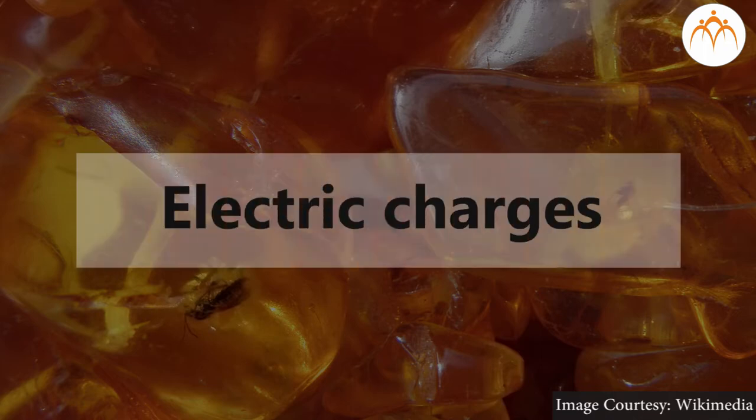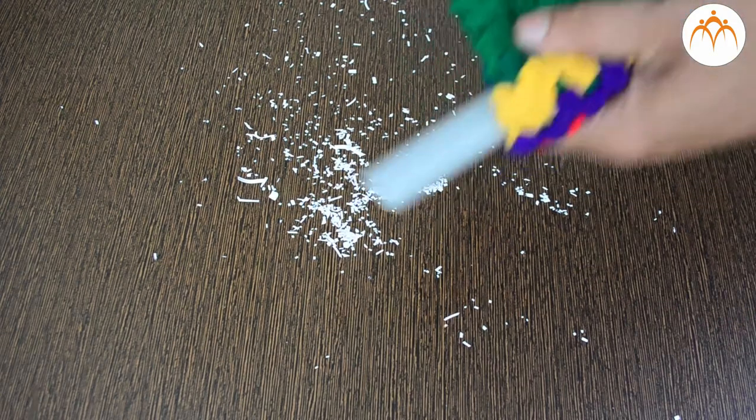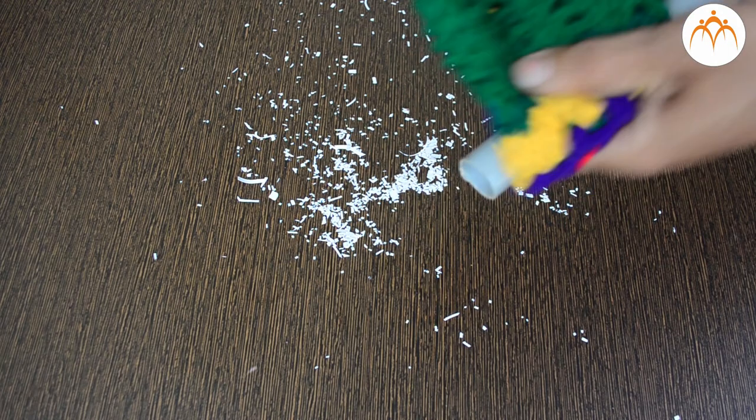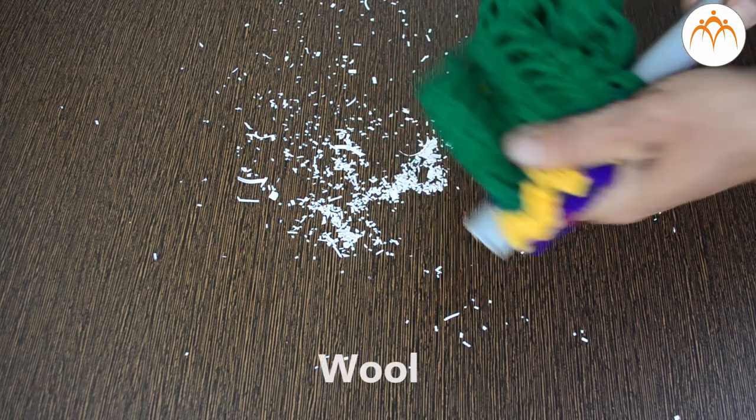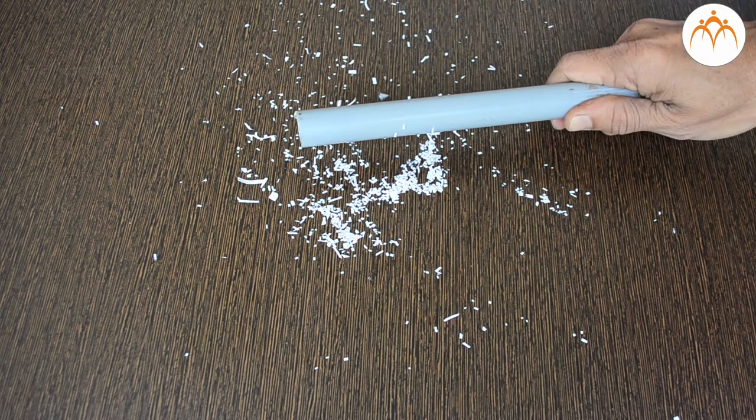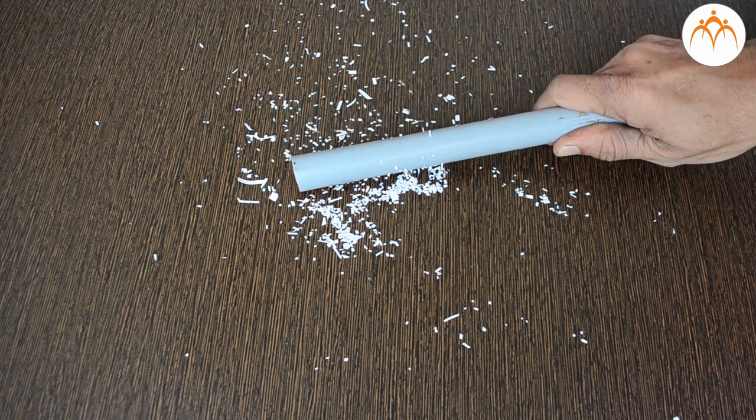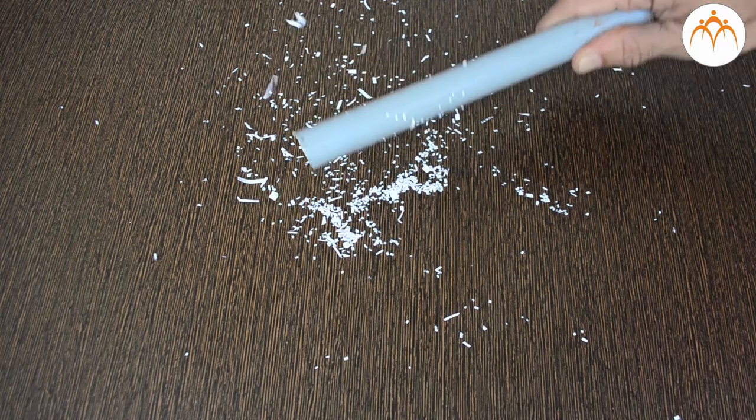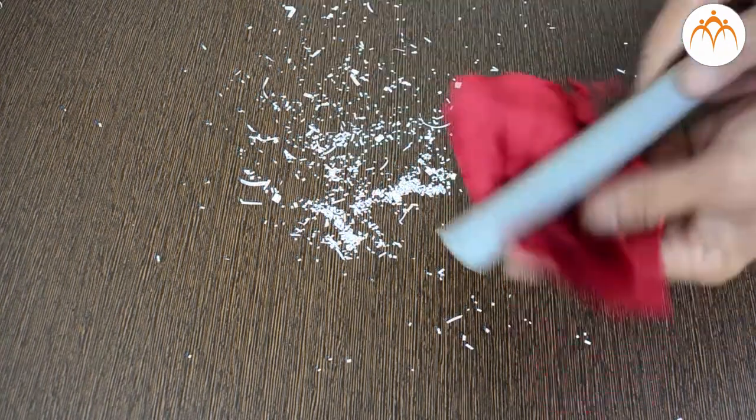Now that we have learned about electric charges, let's perform some activities to understand these charges better. Let us take a PVC pipe and rub it against a woolen cloth. If we take this pipe and bring it near pieces of paper, what will happen? These pieces of paper get attracted to it.